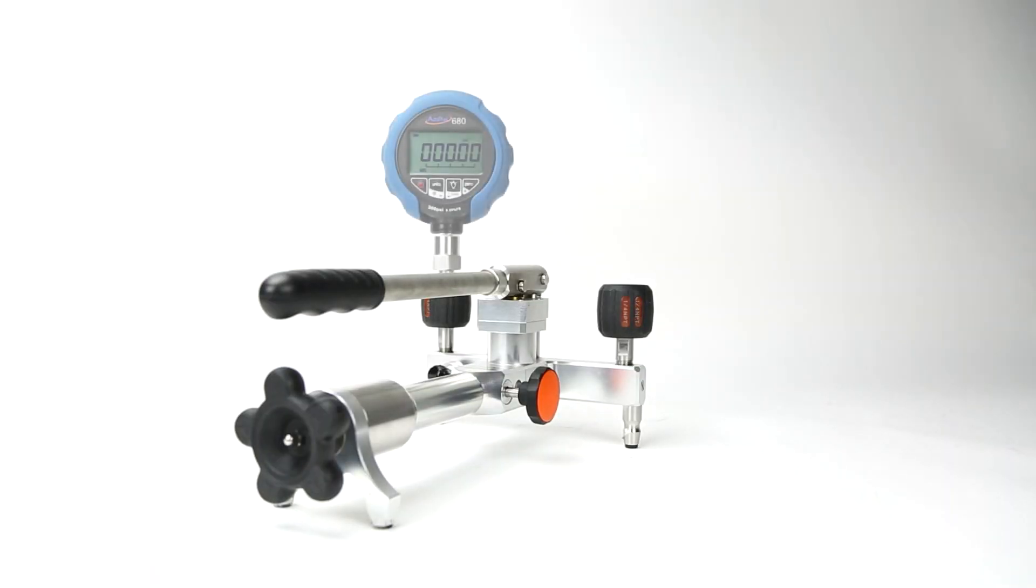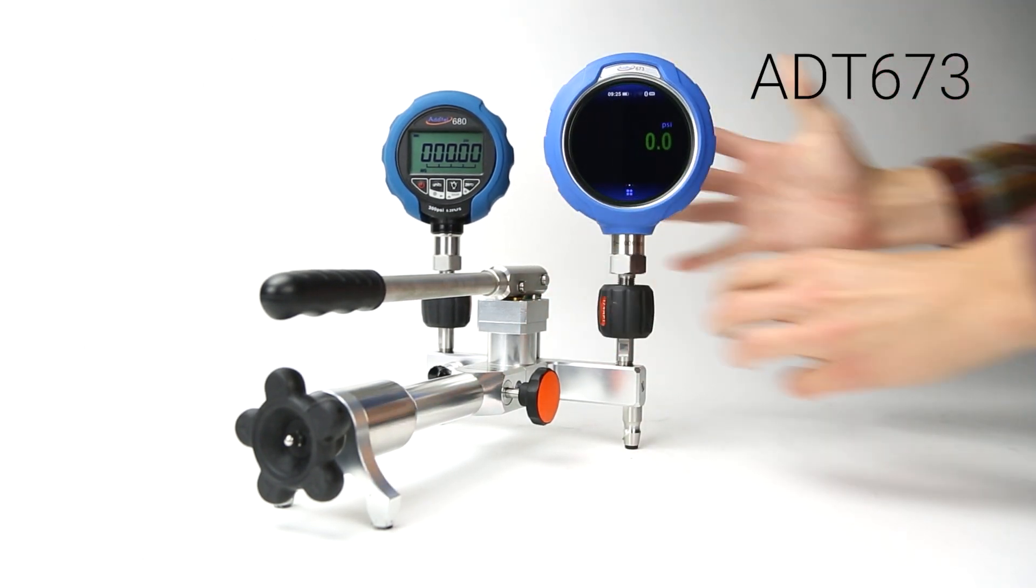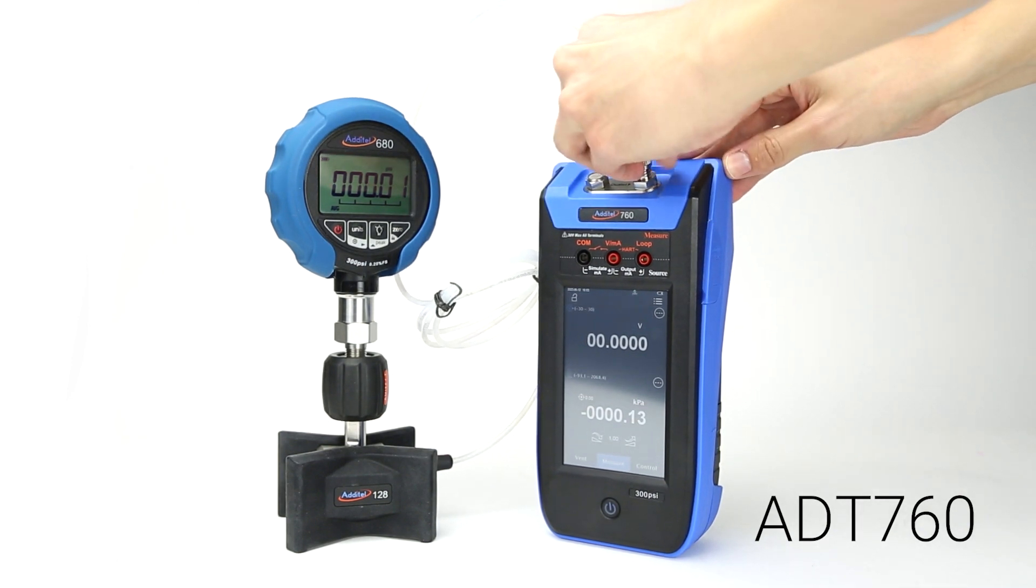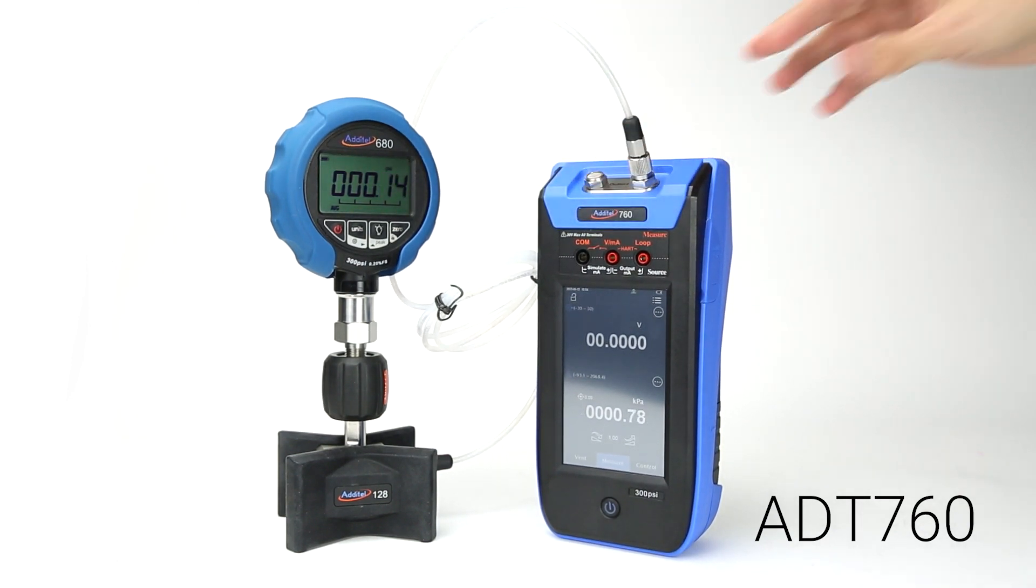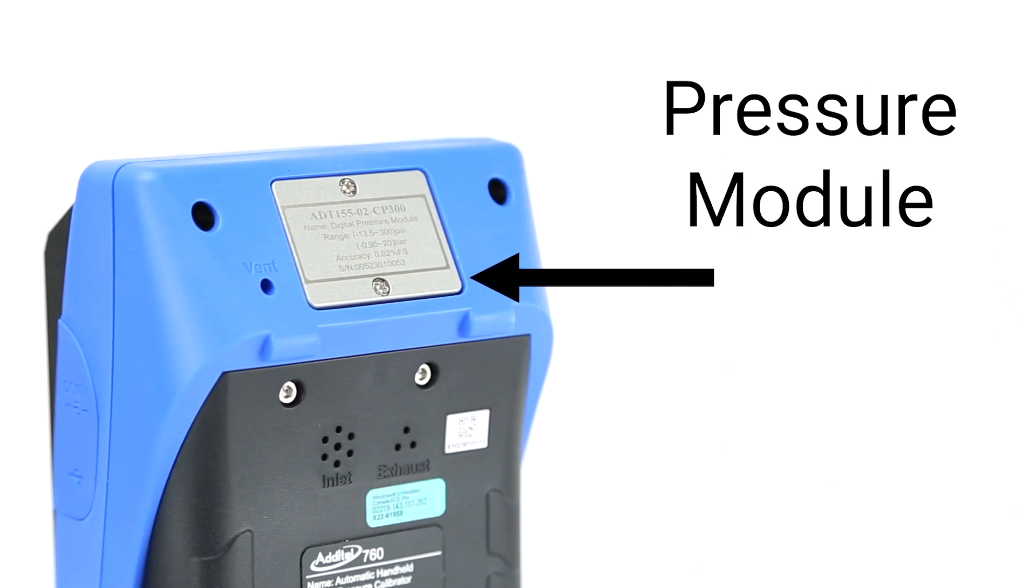For the second calibration, both the 673 calibrator and gauge under test can be connected directly to the pump. And for the third calibration, the gauge under test can be directly connected to the Adytel 760 automatic calibrator, which uses a swappable pressure module on the back of the device as the pressure reference.